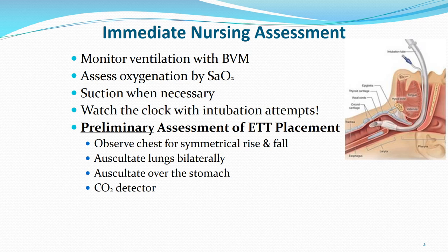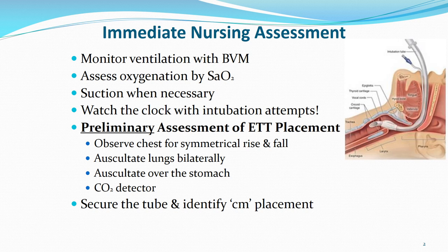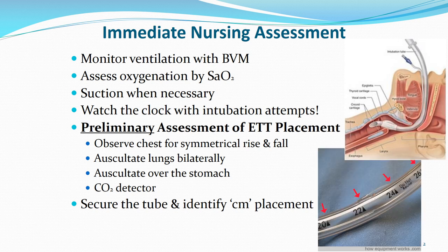Once the tube is confirmed to be in the right place — bilateral chest rise, oxygen saturations increasing up to 94% — the tube needs to be secured. Just because it's in the right place now does not mean it can't move, so it needs to be secured to the patient. We also need to document where it's secured. You'll see markings on the endotracheal tube itself so we can identify how deep the tube is for that specific patient. For example: size 7 endotracheal tube taped at 22 centimeters at the lip. The oncoming nurse should be able to walk in the room and confirm the patient's lip is touching that 22 mark.